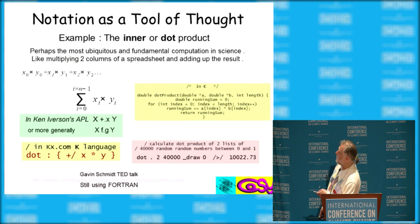Here's an example that is really the center of things: the dot product, the inner product or dot product, is just the sum of pairs of columns on a spreadsheet multiplied and added up. In traditional notation, it looks like this.